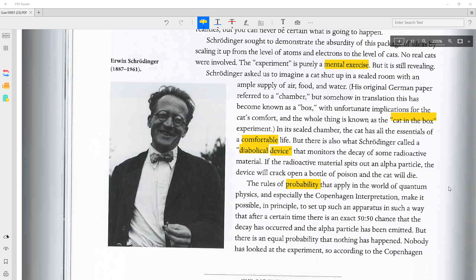In its sealed chamber, the cat has all the essentials of a comfortable life. But there is also what Schrödinger called a diabolical device that monitors decay of some radioactive material. If the radioactive material spits out an alpha particle, the device will crack open a bottle of poison and the cat will die.